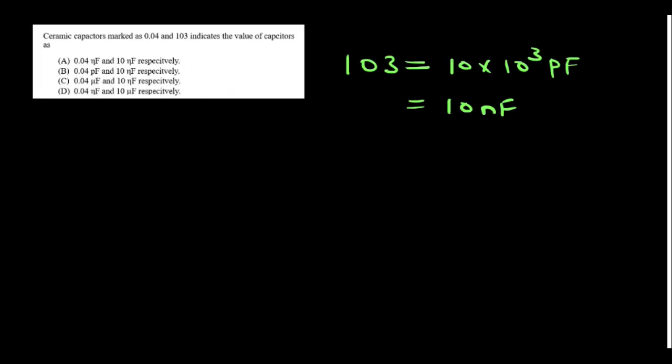Ceramic capacitors marked as 0.04 indicate 0.04 microfarad. A marking of 103 means 10 multiplied by 10³ picofarads, which equals 10,000 pF. Converting to nanofarads gives 10 nanofarad. Option C is the right answer.